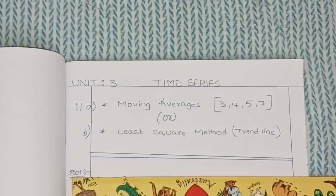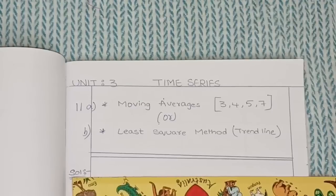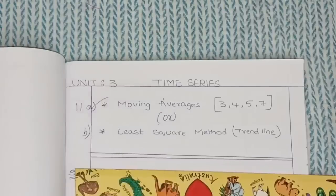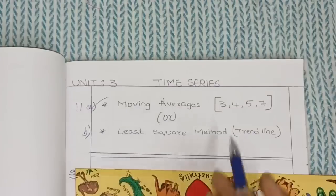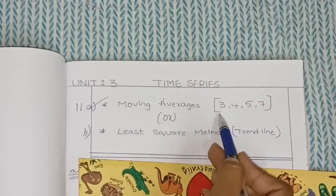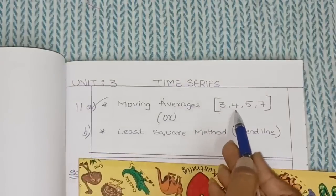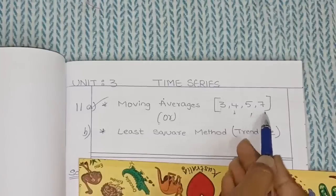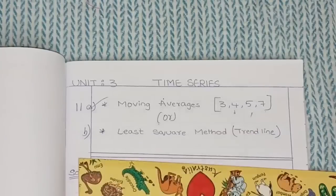I will explain both the moving averages method and the least square method, but my suggestion is that you go with the moving averages method — it's very easy. In the moving averages method, you will calculate three years, four years, five years, and seven years moving averages.